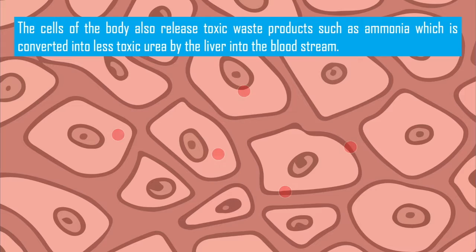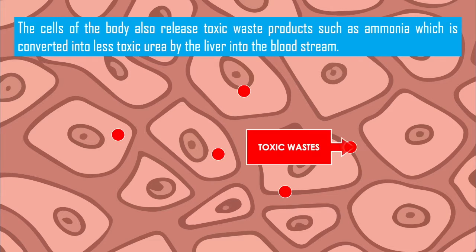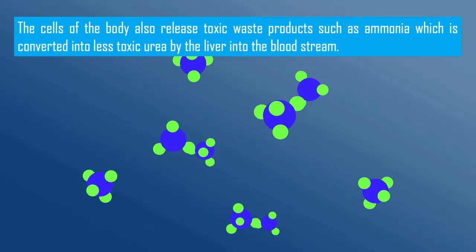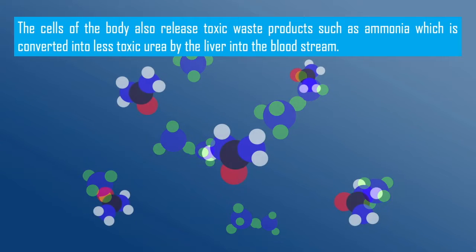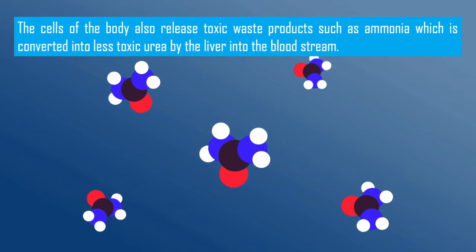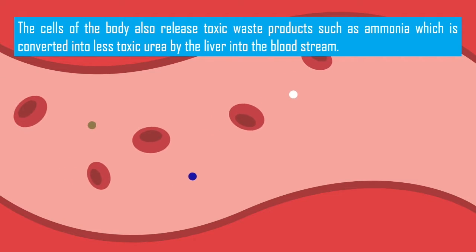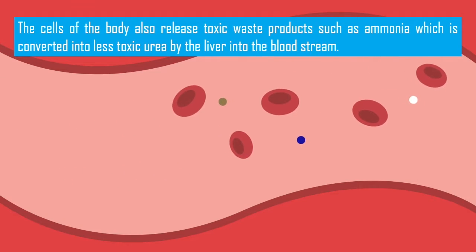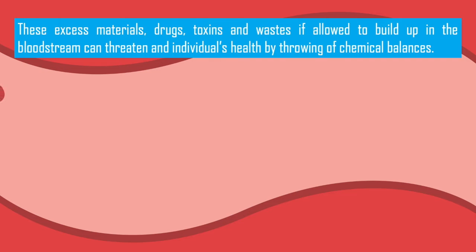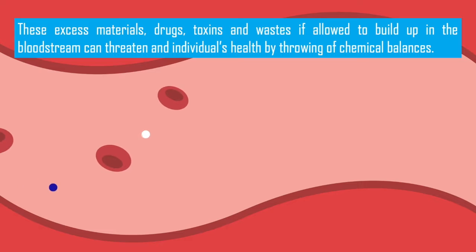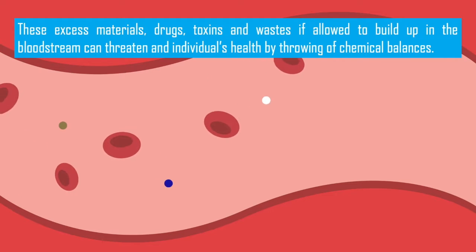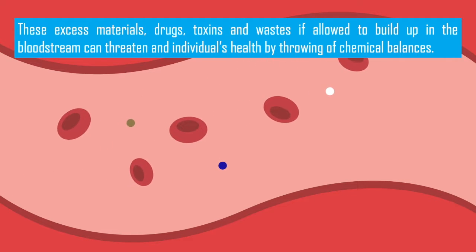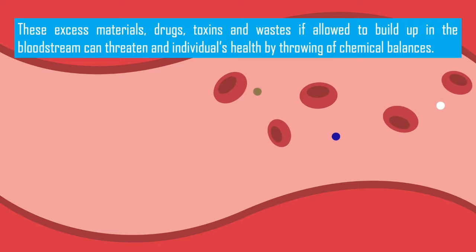The cells of the body also release toxic waste products such as ammonia, which is converted into less toxic urea by the liver into the bloodstream. These excess materials, drugs, toxins, and waste, if allowed to build up in the bloodstream, can threaten an individual's health by throwing off chemical balances.